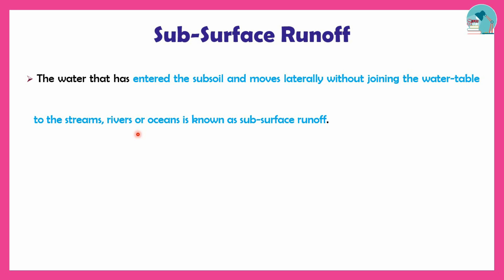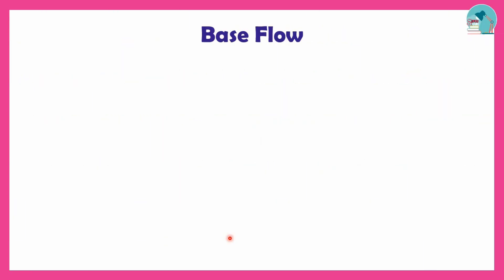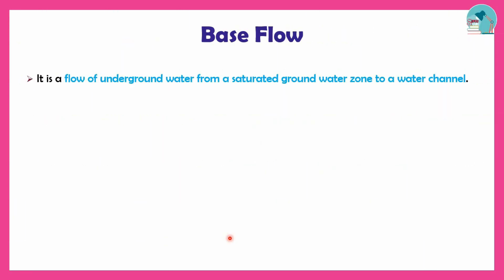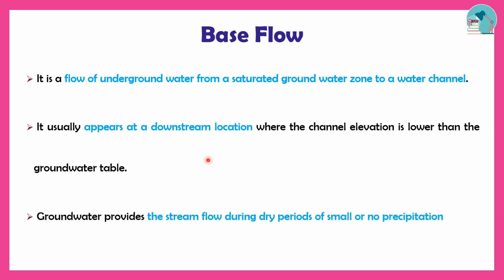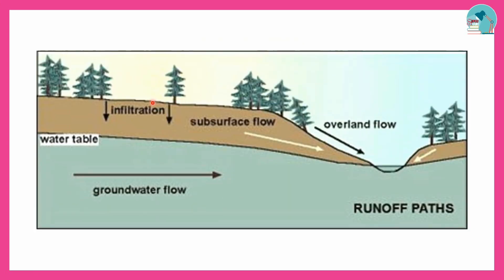Water goes from streams to the ocean. Sub-surface flow — the sub-soil is the water table, and this is called sub-surface runoff or interflow. Next is base flow — base flow is the last water table level. The saturated groundwater zone feeds the water channel, and this is the base flow at downstream locations. This stream provides flow during dry periods or after precipitation.